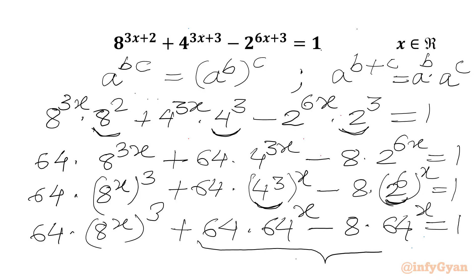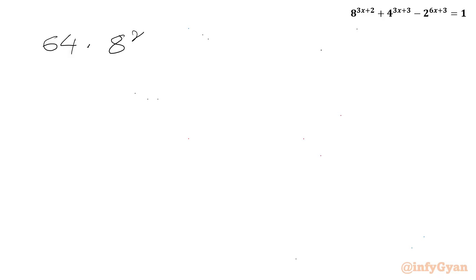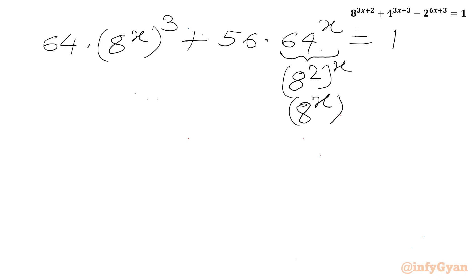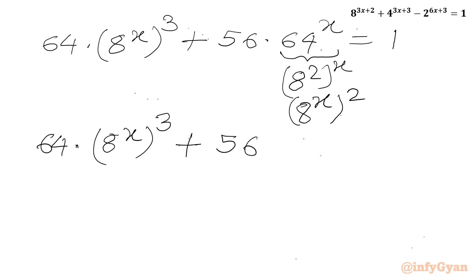Now 64 minus 8 is 56, so we can write 64 times (8^x)³ plus 56 times 64^x equal to 1. Next, 64^x can be written as (8²)^x, which equals (8^x)². So our equation becomes 64 times (8^x)³ plus 56 times (8^x)² equal to 1.